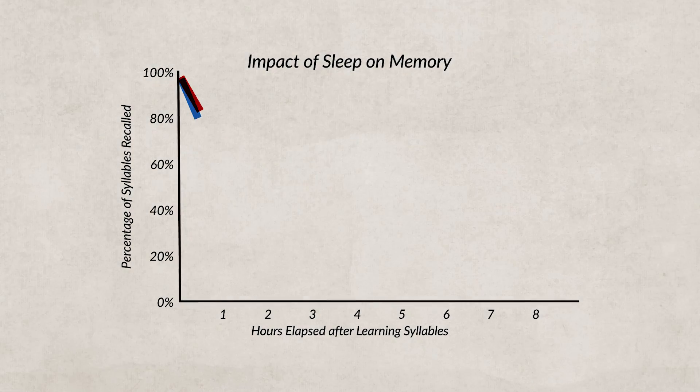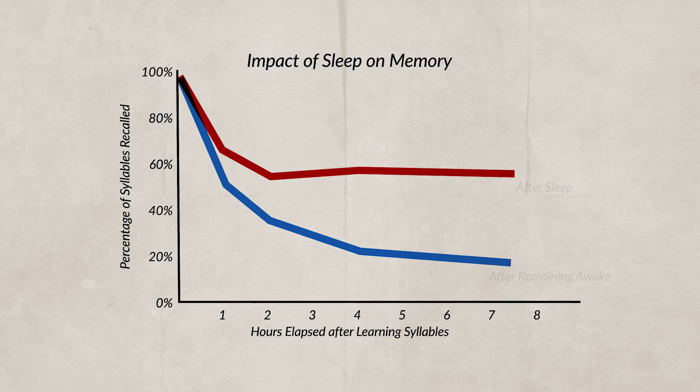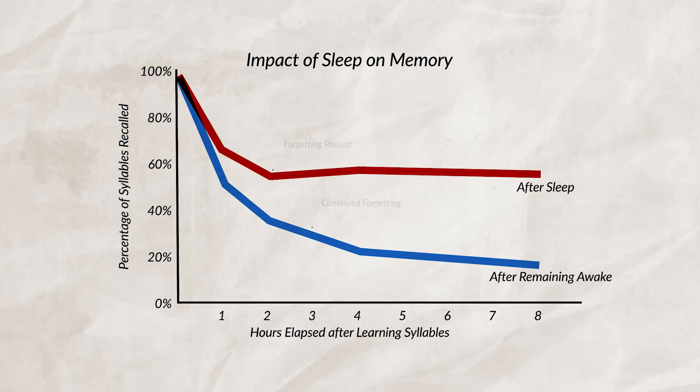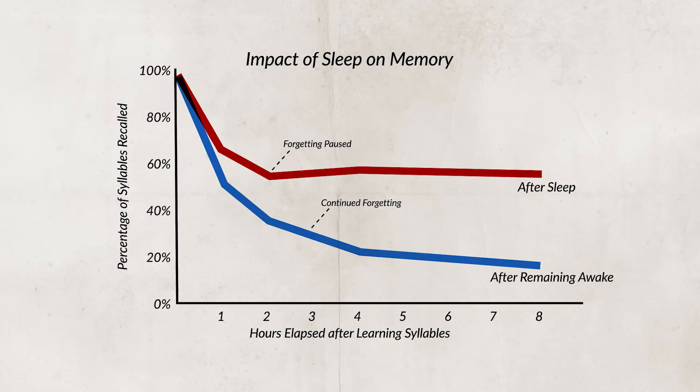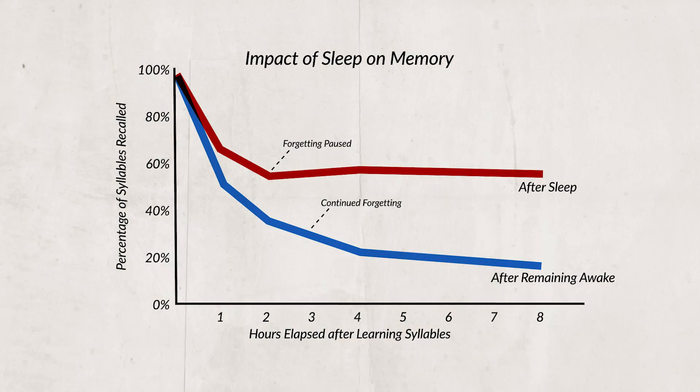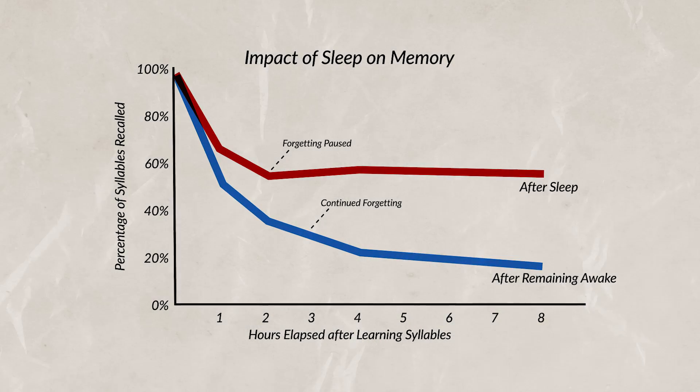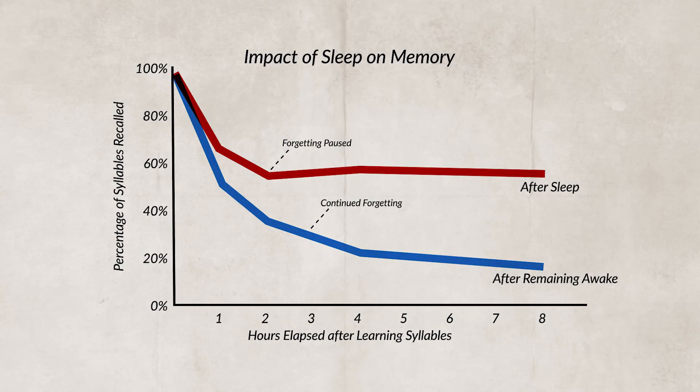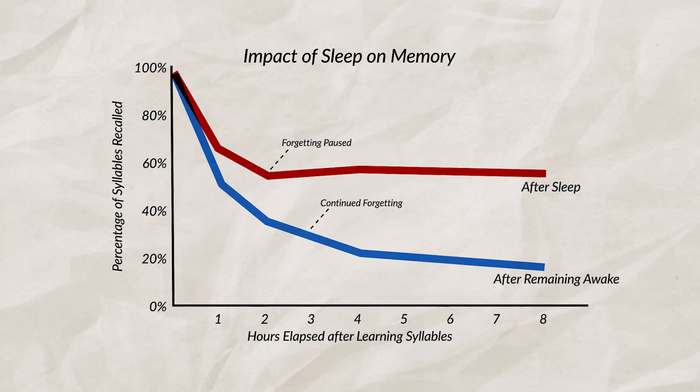If you want to try and limit the amount of retroactive interference, it helps to review the information about an hour or so before bed. Researchers John Jenkins and Carl Dahlebach discovered this when conducting an experiment where people had to learn nonsense syllables and then tried to recall them after being up for eight hours or being asleep. They found that people who went to sleep were better at recalling the information — just one of the reasons why it's important to get a good night's sleep before a test or any big life event.